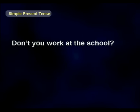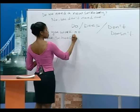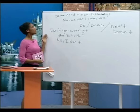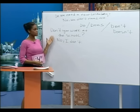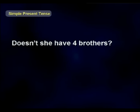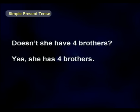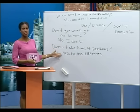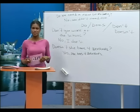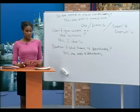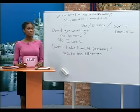You can also begin a question with a negative. Don't you work at the school? No, I don't. Doesn't she have four brothers? Yes, she has four brothers. Now let's practice. I want to ask you some questions using the simple present. Silvia, where does your best friend live? He lives near my parents. He lives in Sarajevo. He is a student too.